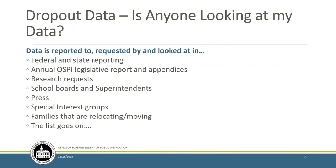Another big question is dropout data—does it matter if it's a D or a U? The dropout information is looked at by the annual OSPI legislative report and appendices we publish. We have to submit dropout data to federal and state reporting. We have research requests where we send out de-identified student-level data consumed by the Education Research Data Center in Washington State. It's used by the CTE office for federal Perkins reporting. Your school boards, superintendents, the press, special interest groups, and families looking at moving all look at this data. The dropout data gets a lot of focus.